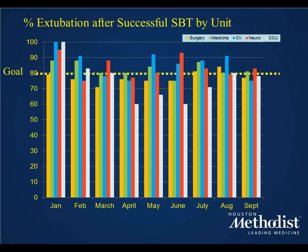From a quality improvement standpoint, our institution tracked whether spontaneous breathing trials were being performed and whether extubation orders followed. We have five different ICUs with different patient populations. We pushed utilization upward — now all units are above 80% of the time when a patient passes a spontaneous breathing trial, we get an order to liberate them from the ventilator. Back to you, Mike.